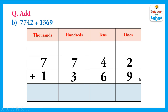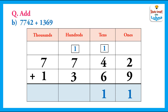Add the digits in the ones column. In the ones column we have 2 and 9. 2 plus 9 equals 11, so we will regroup the ones. We write 1 in the ones column and carry 1 to the tens column. In the tens column we have 1 plus 4 plus 6. 1 plus 4 equals 5, and 5 plus 6 equals 11. We will regroup the tens and write 1 in the tens column and carry 1 to the hundreds column.